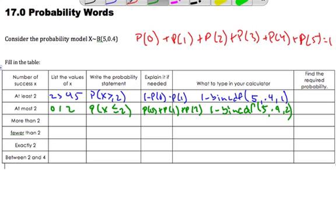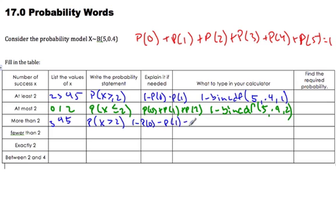If I want more than 2, well, if I have more than $2 in my wallet, that means I don't have $2. I have more than 2. I will have 3, 4, or 5. So this is going to be 3, 4, and 5. The probability statement would be the probability that X is greater than 2. To do this calculation, I could go 1 minus the probability of 0, minus the probability of 1, minus the probability of 2. And so it would be 1 minus binomial CDF, 5 comma 0.4 comma 2, because I want to subtract all the way up to and including 2. And that will give you the 3, 4, or 5.